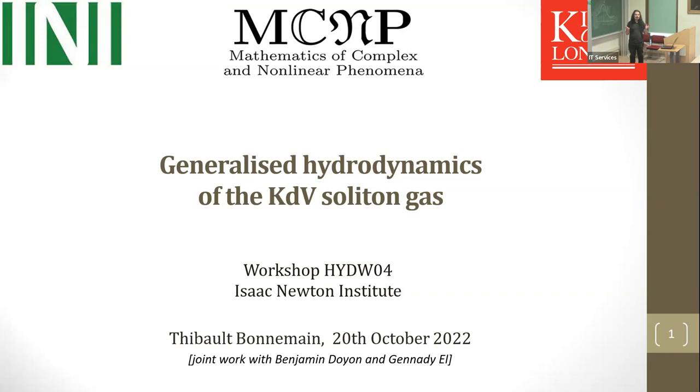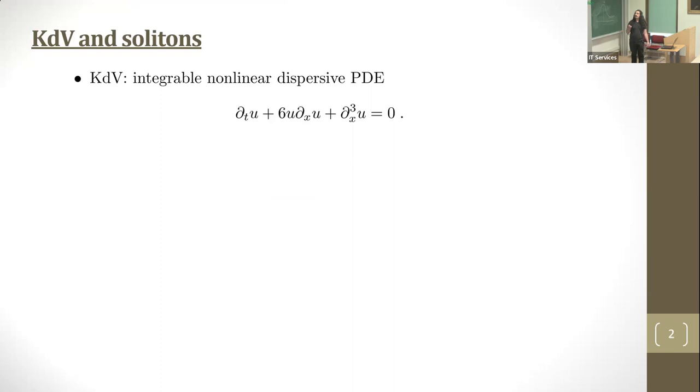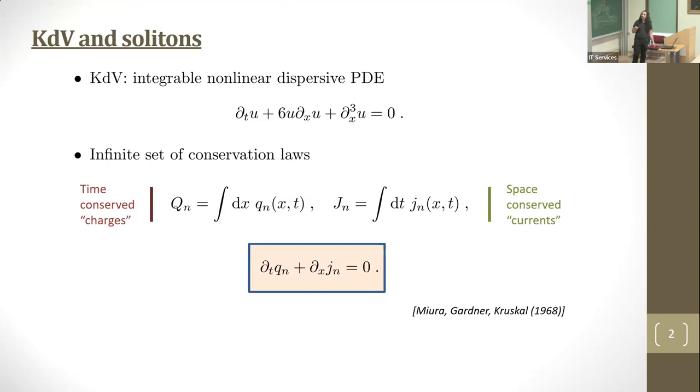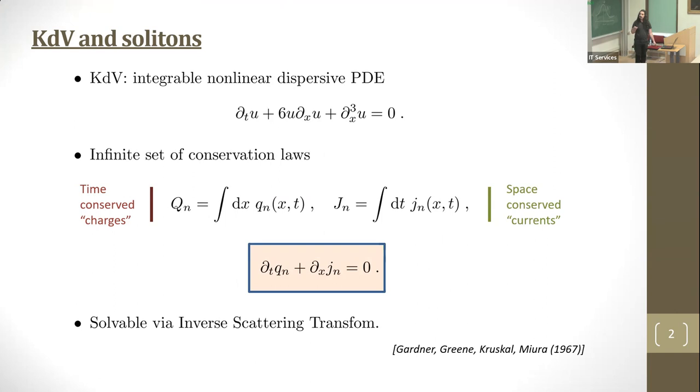This will be a fairly formal talk. I'm interested in KDV as a prototypical example of an integrable system. The two aspects of integrability I'm most interested in: there exists an infinite set of conservation laws. Q is the time-conserved charges and J the space-conserved currents. The other aspect is that it's solvable via inverse scattering transform, and the n-soliton solution can be derived via this IST.